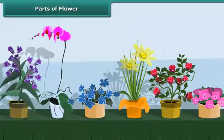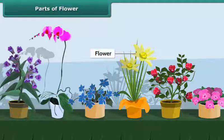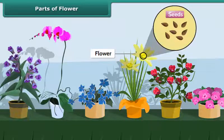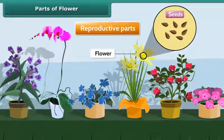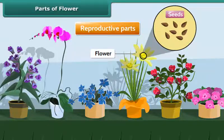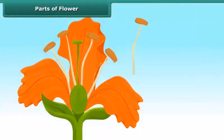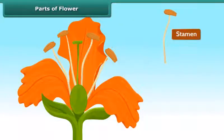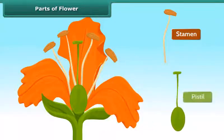Flowers are the beautiful parts of a plant. They're important in making seeds; therefore, they are the reproductive parts of a plant. Let's learn about their parts. Stamen is the male part of a flower, and pistil is the female part of the flower.